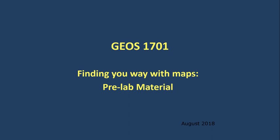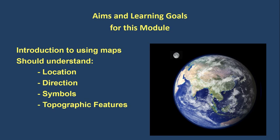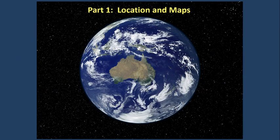Welcome to the JOS 1701 Finding Your Way with Maps pre-lab material. The aims and learning goals for this module are to introduce students to the general use of topographic maps. After completing this module, students should understand how to use maps to find the location of features on the Earth's surface, be able to navigate around a map and understand aspects of direction, understand the different symbols used to depict features on the Earth's surface, and understand the topographic and landform features of the Earth's surface. This is part one of the module, covering the basic elements of location and using maps to define the location of places.